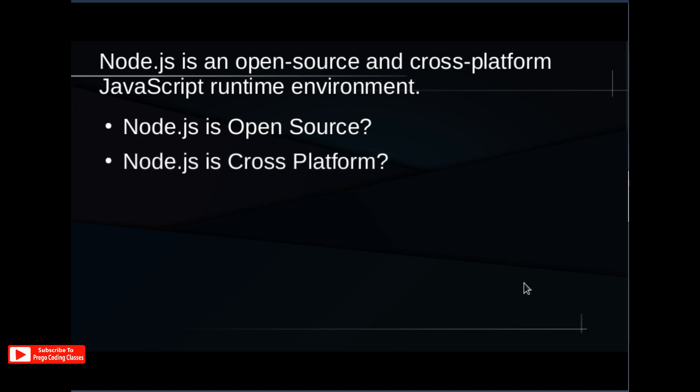The second point is that Node.js is cross-platform. What is cross-platform? For example, you can build an Android app in Android Studio, but you cannot run it on an iPhone. Suppose you build an app that runs on Android as well as Mac — that makes it cross-platform, meaning an application supported on multiple operating systems. In the same way, Node.js can run on Linux, Mac, and Windows.